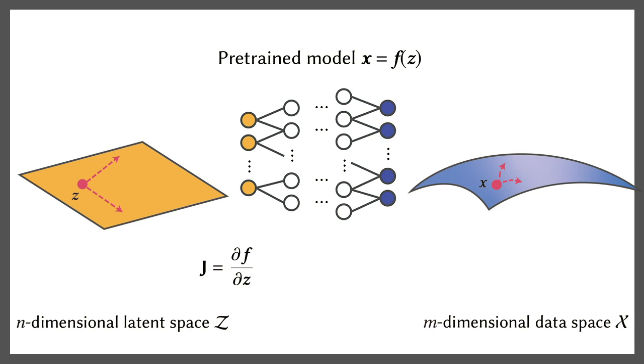To find a direction that brings us a sufficient change in the data space, we first compute the singular value decomposition of the Jacobian, and then perform stochastic sampling according to the magnitude of the singular values to obtain the corresponding right singular vector as the search direction.